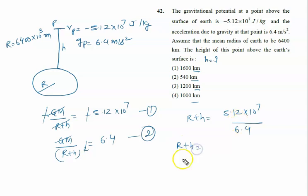So r plus h equals 0.8 times 10 raised to the power 7. But this is in meters, and the answer needs to be in kilometers.